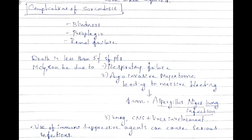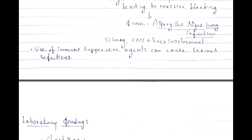Complications of sarcoidosis include blindness due to optic neuritis or uveitis, paraplegia, renal failure. Death is seen in less than 5% of patients, most commonly due to respiratory failure, arrhythmias, or angioinvasive mycetoma. Angioinvasive mycetoma is a fungal disease caused by Aspergillus niger that can invade blood vessels and lead to massive bleeding. The use of immunosuppressing agents can cause serious infections.